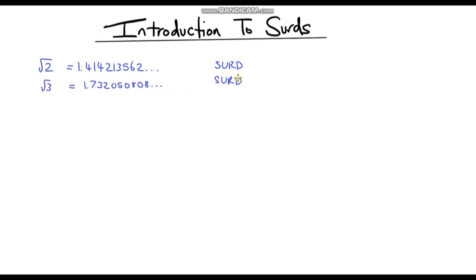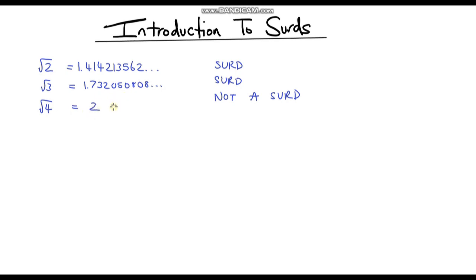You might be wondering, is the square root of any number a surd? Well, no, obviously not. For example, if we had the square root of 4 — we can simplify this. The square root of 4 is just 2, because 2 times 2 is 4. So we can clearly see this is not a surd. Because we can write it as an integer, or as a fraction — we could say that's 2 over 1. As long as we can write the number as a fraction, it is not a surd.